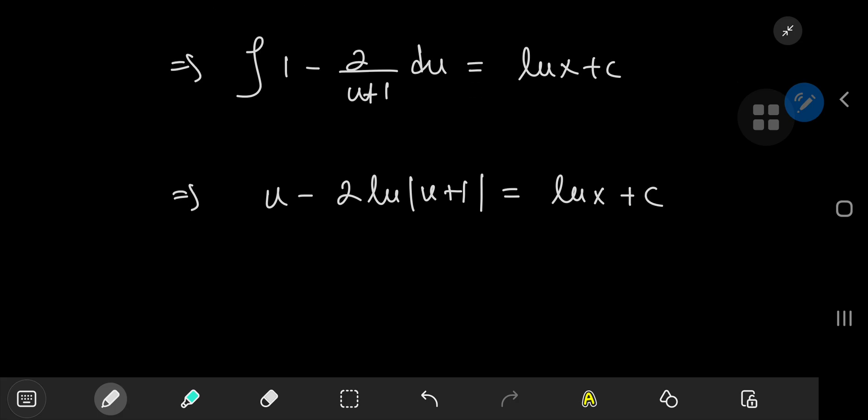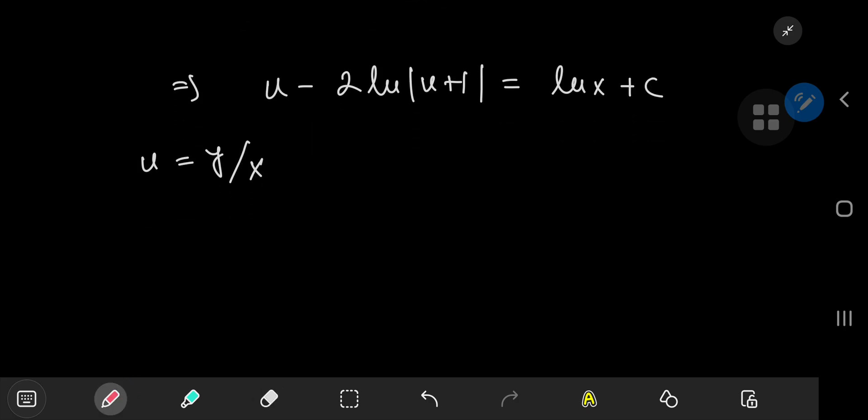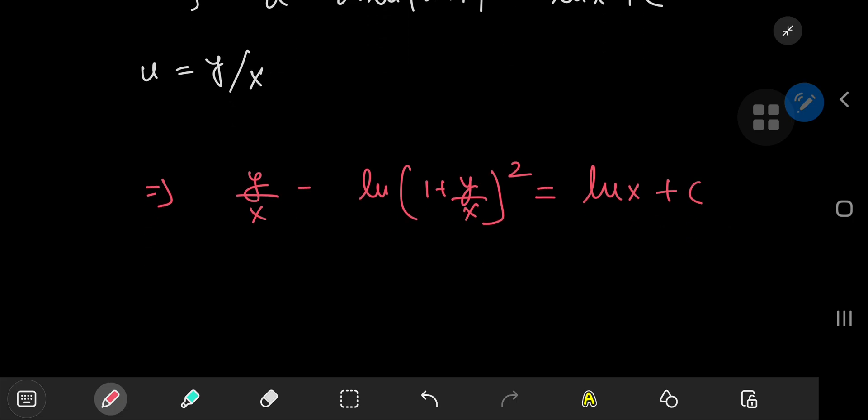And this here is the solution in the u world. But recall that we were in the x and y world. So we recall that we let u be equal to y by x. So play time is over for u. And we're about to go back into the y world. And this implies that we have y by x minus twice the logarithm of one plus y by x. And you can use the properties of the logarithm and just write this as log one plus y by x squared being equal to the natural logarithm of x plus c. And that is the implicit solution to your differential equation.